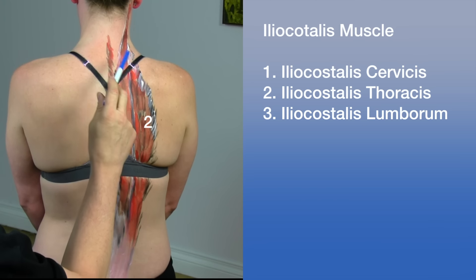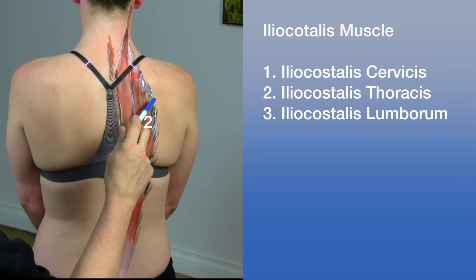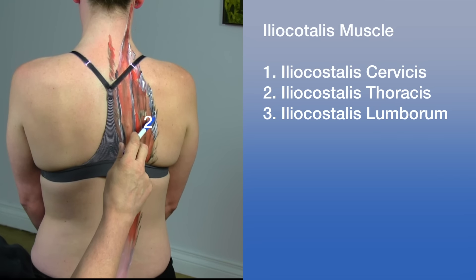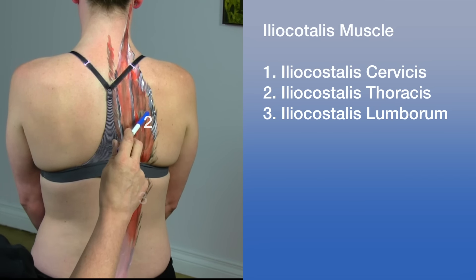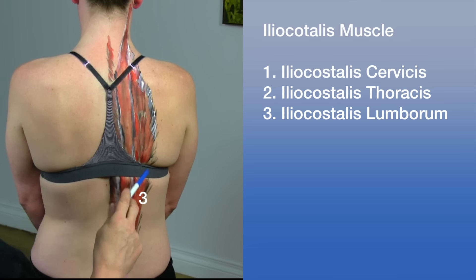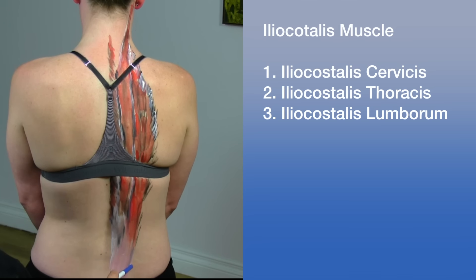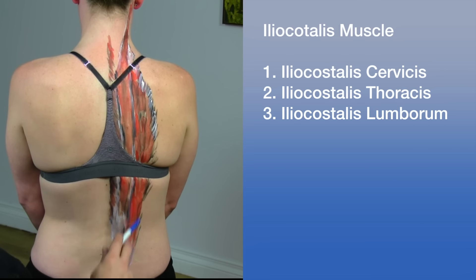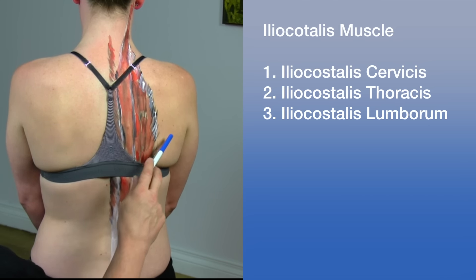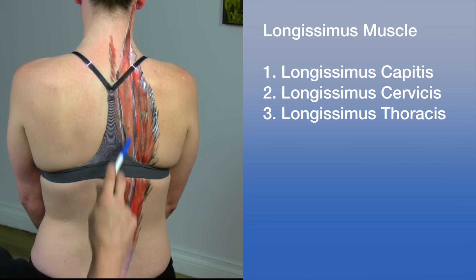Let's go over the erector spinae — a group of three muscles. An easy way to remember them is 'I love spines': I for iliocostalis, L for longissimus, and S for spinalis. Body paint was used here to illustrate the muscles on the back.